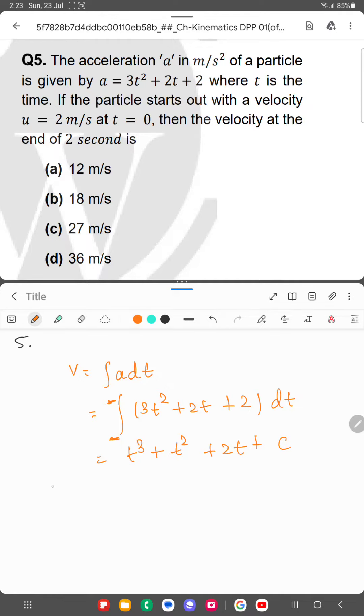Now it's given that v(0) is 2 m/s. So putting t=0: 0 + 0 + 2(0) + c = 2. So the value of c will be equal to 2 m/s.